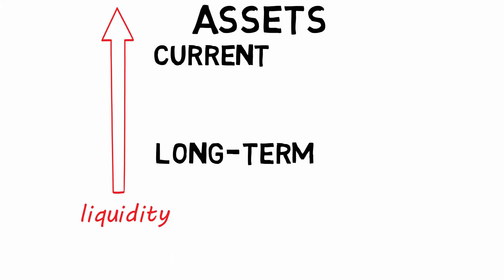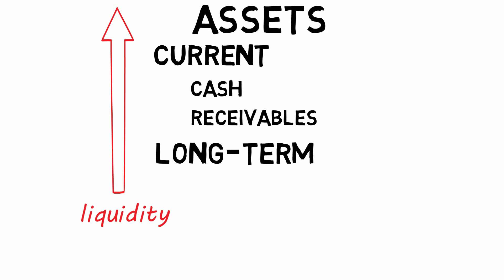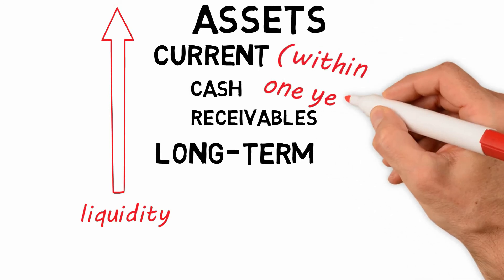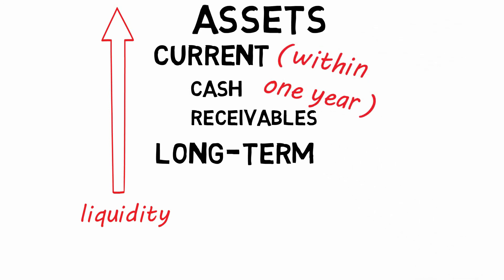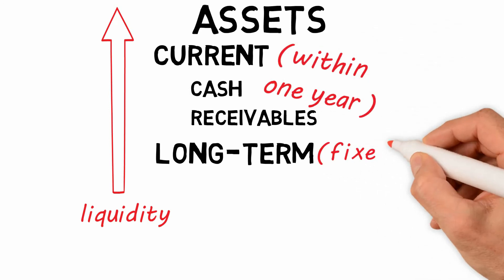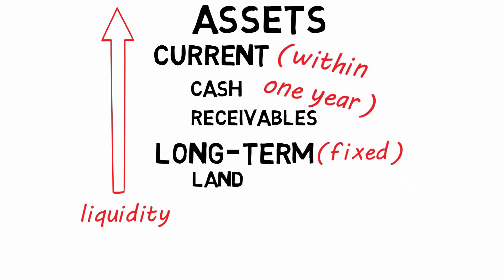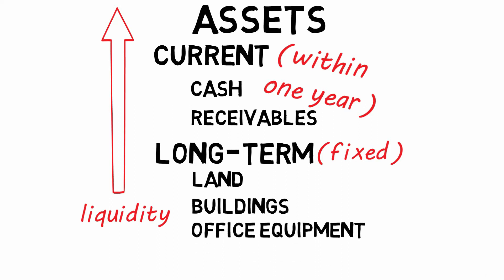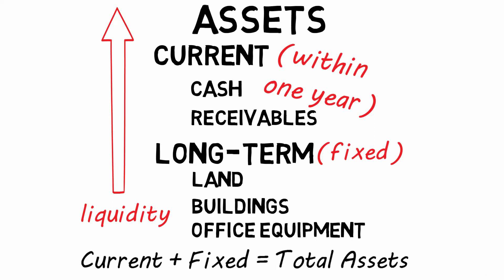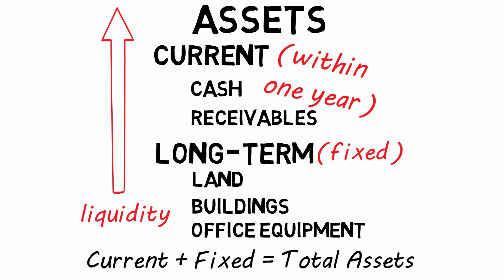Current comes first with the long term next. Current includes cash and receivables — in one year's time, the cash is retrievable. Long term, also known as fixed: land, buildings, and office equipment. Relax, no need to sweat. Add current and fixed and you've just found the total assets.